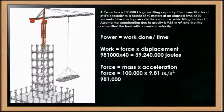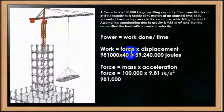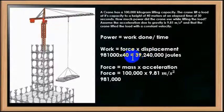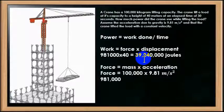We are going to then, after we work out our force, we are going to have to insert our force into the work formula and the displacement is 40 meters. And that is multiplied and we get 39,240,000 joules.